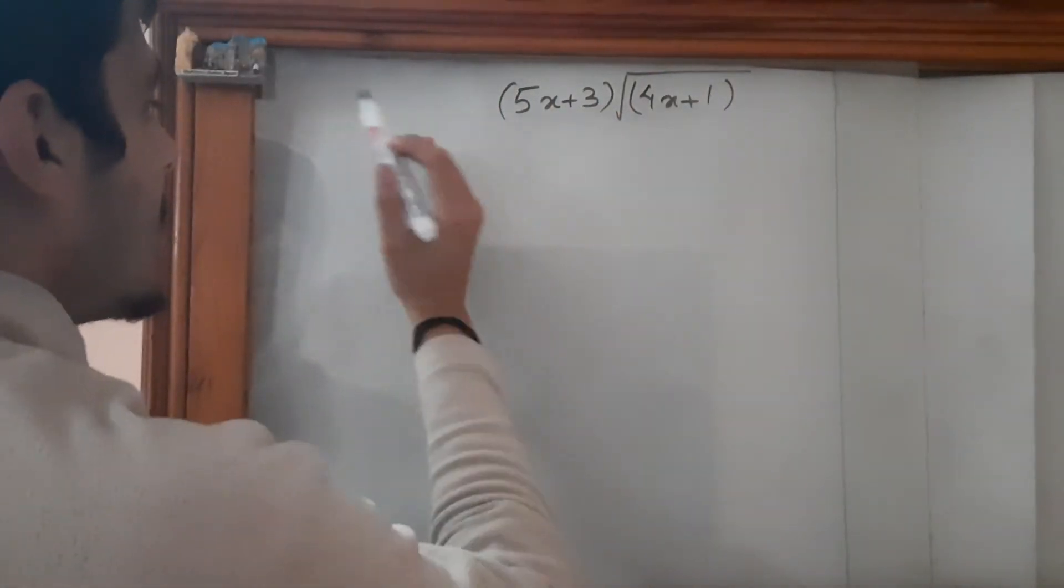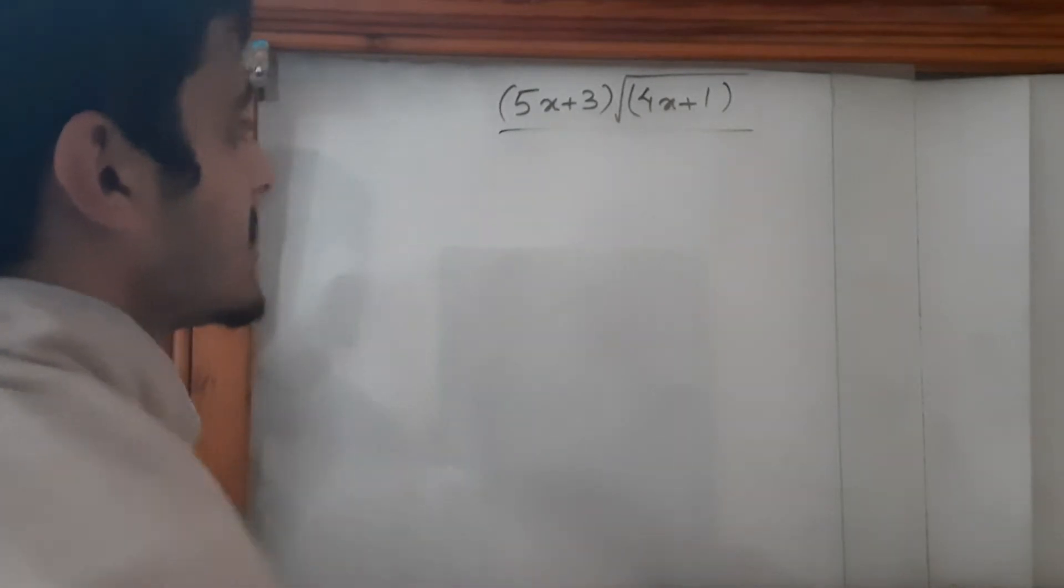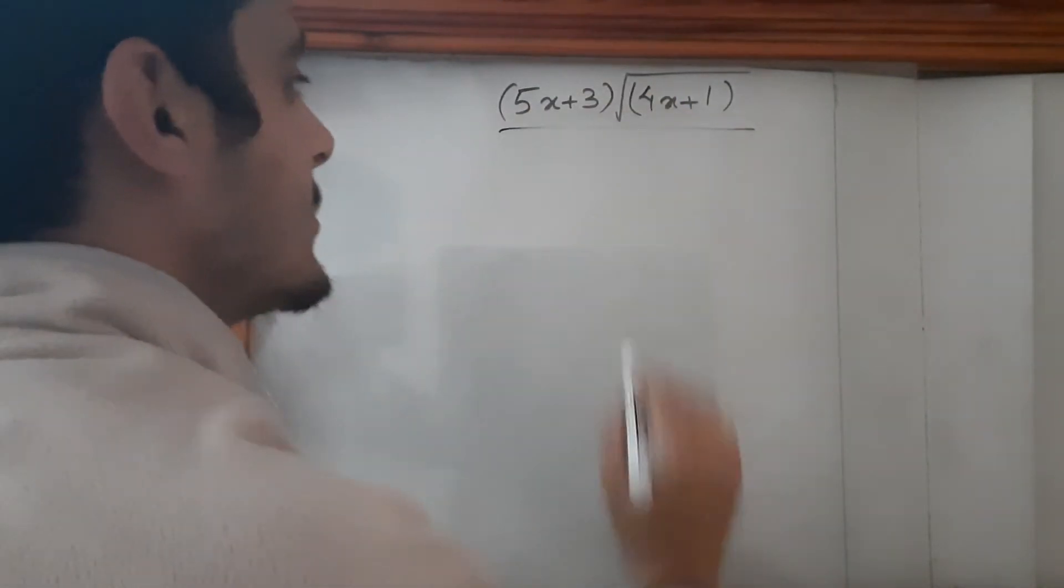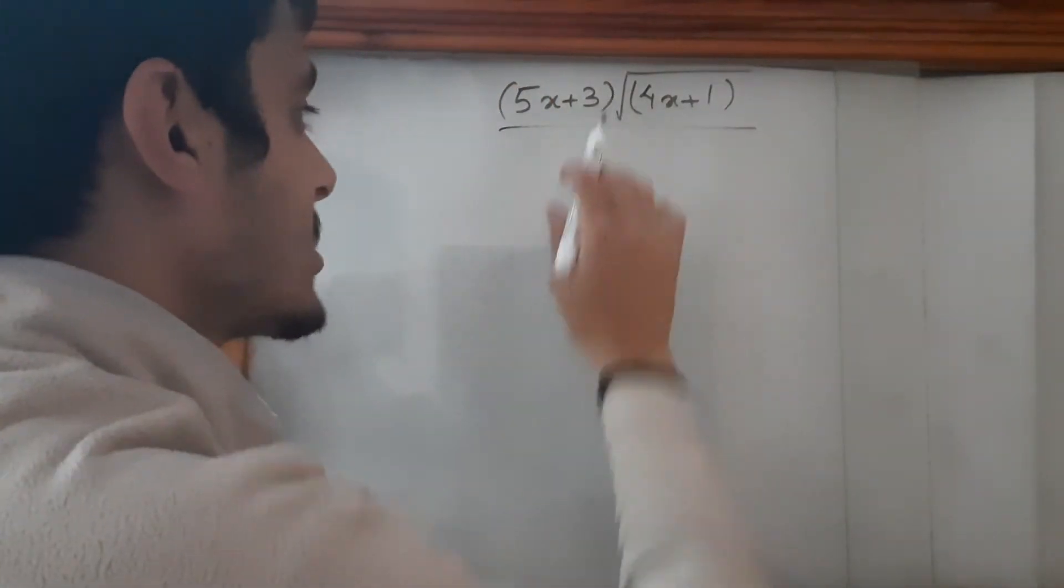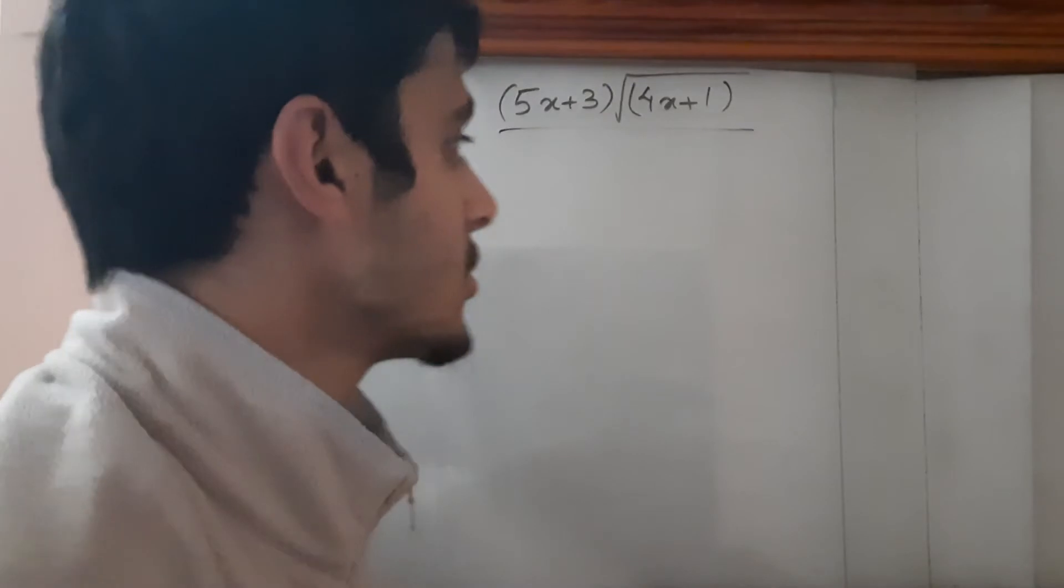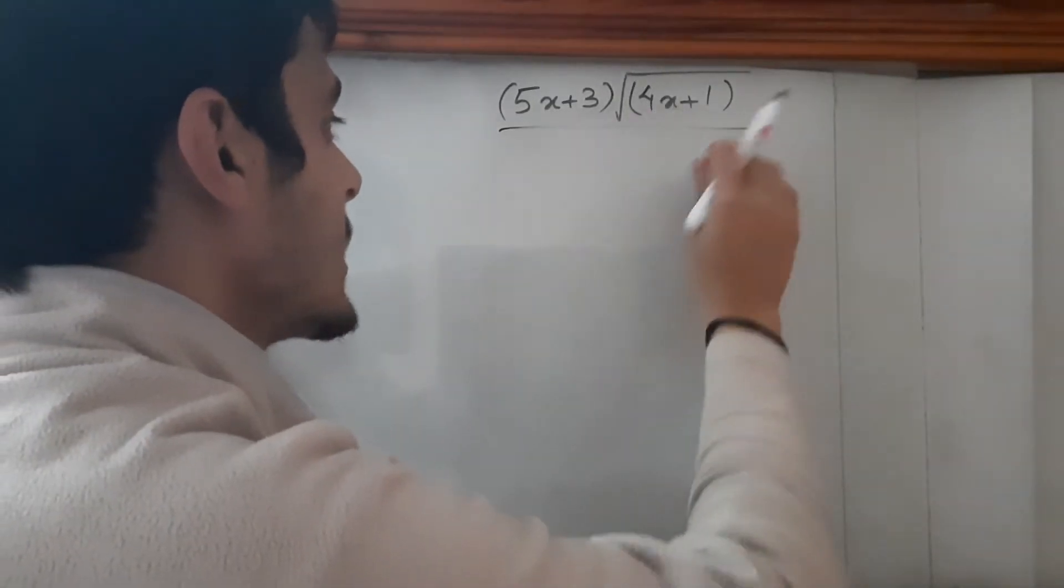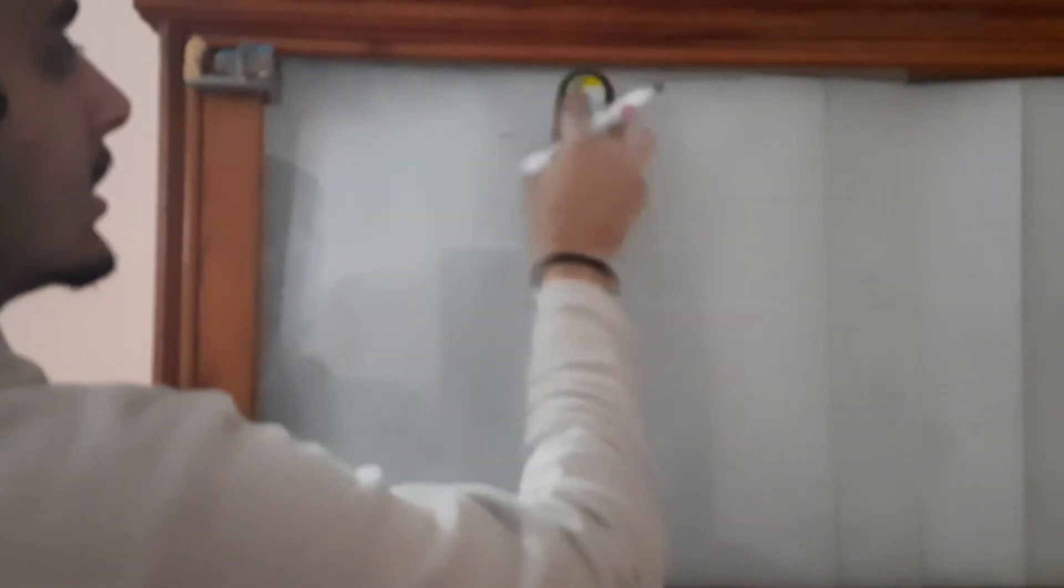Hello everyone. Today we'll be talking about the integration of (5x + 3) times the square root of (4x + 1). I've already done a question like this and solved it in one of my previous videos. We are going to use the same technique in this one as well.